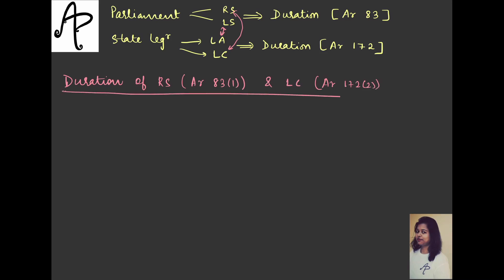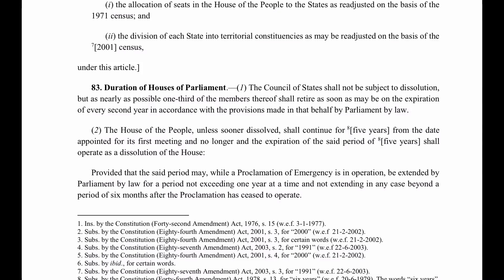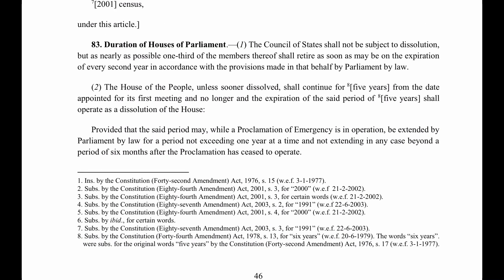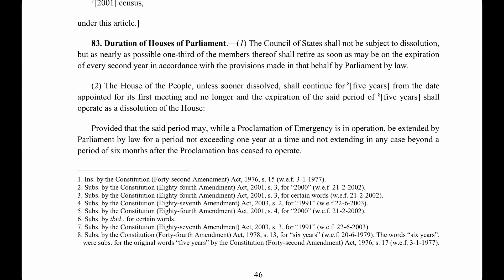We have the common things together for the upper house first, then we'll see the similar thing for the lower house. To understand duration, let's go to the constitution. The first thing it is telling is that the Council - remember, I will be using Lok Sabha and Rajya Sabha for convenience, but the constitution uses 'Council of States' and 'House of the People'. Council of States shall not be subject to dissolution.